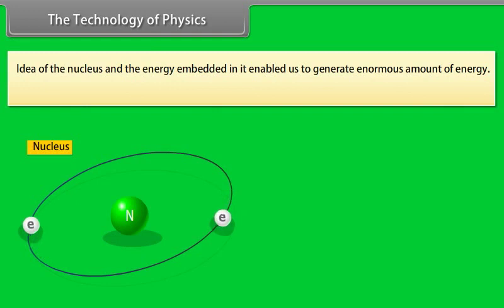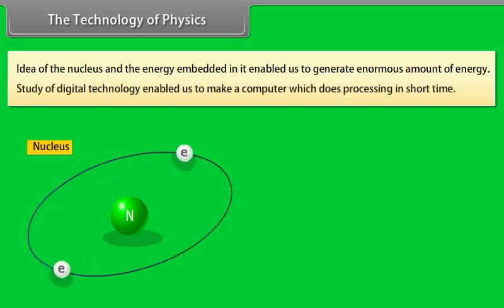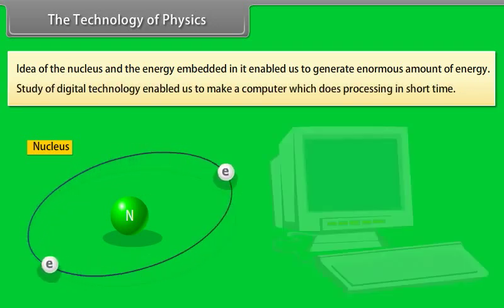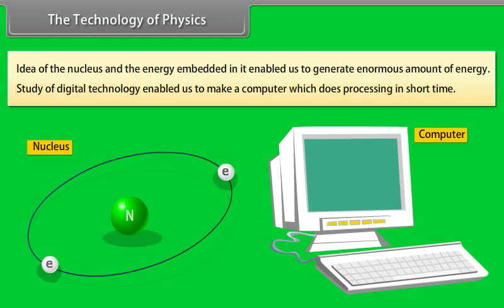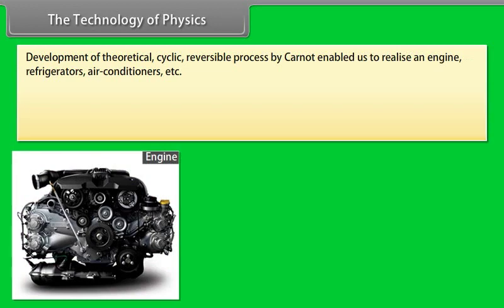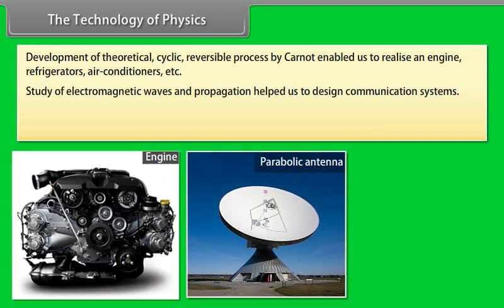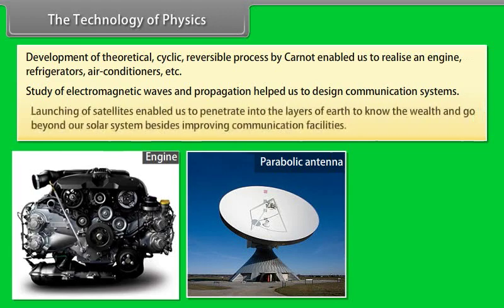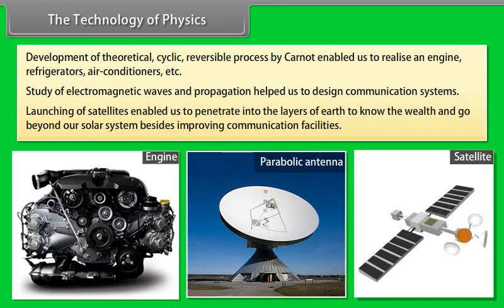The technology of physics. Idea of the nucleus and the energy embedded in it enabled us to generate enormous amount of energy. Study of digital technology enabled us to make a computer which does processing in short time. Development of theoretical cyclic reversible process by Carnot enabled us to realize an engine, refrigerators, air conditioners, etc. Study of electromagnetic waves and propagation helped us to design communication systems. Launching of satellites enabled us to penetrate into the layers of Earth to know the wealth and go beyond our solar system besides improving communication facilities.